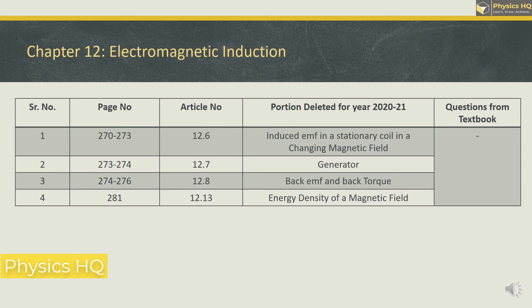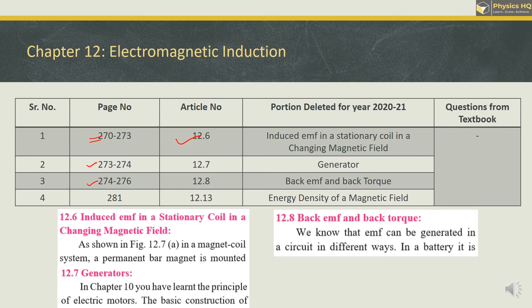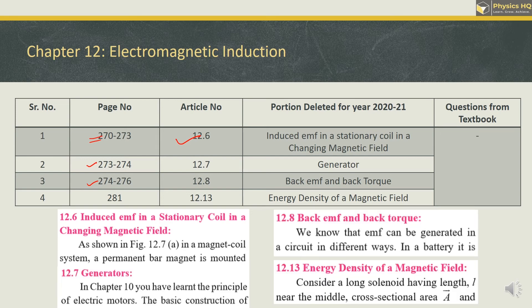For Electromagnetic Induction, three topics are deleted continuously. Section 12.6 — induced EMF in a stationary coil — is on page 270. Generator on page 273, back EMF and back torque on page 274 are deleted. Along with that, the energy density of the magnetic field on page 281 is deleted. There are no questions omitted for this chapter.